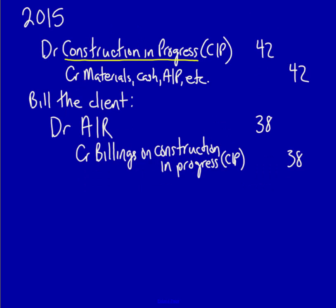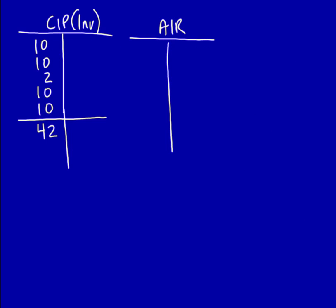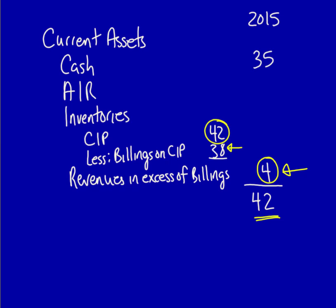After billing the client, we collect some cash. According to the question we collect $35: debit cash $35, credit accounts receivable $35. Accounts receivable now drops to $3. On the updated balance sheet, cash is $35, accounts receivable is $3, CIP is still $42, billings on CIP are $38, and revenues in excess of billings remain $4 — total still $42. All we've done is convert accounts receivable to cash.